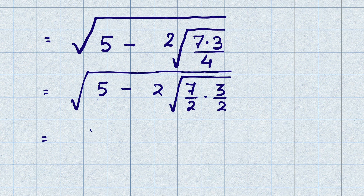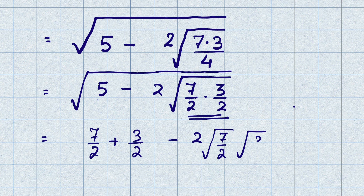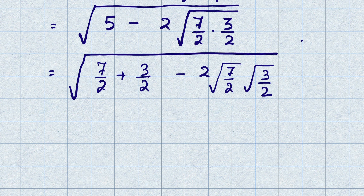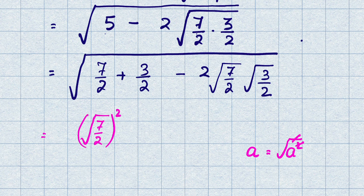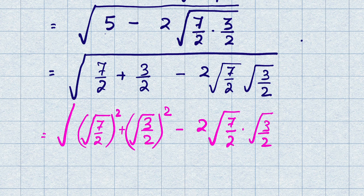We can now write the expression as 7/2 plus 3/2 minus 2×√(7/2)×√(3/2), all under square root. Writing 7/2 as (√(7/2))² and 3/2 as (√(3/2))², we get (√(7/2))² plus (√(3/2))² minus 2×√(7/2)×√(3/2), all under square root.